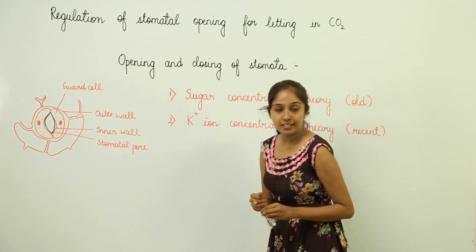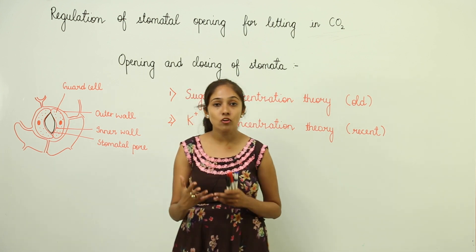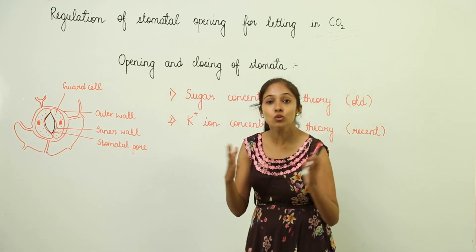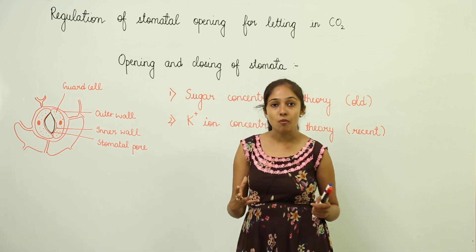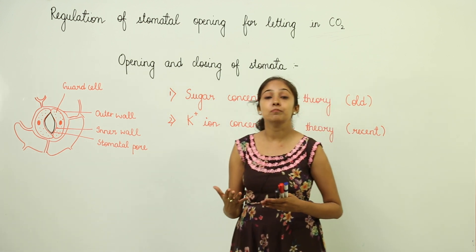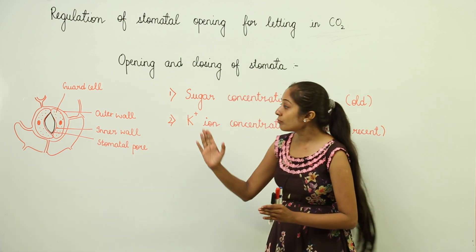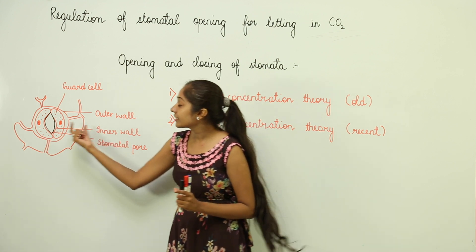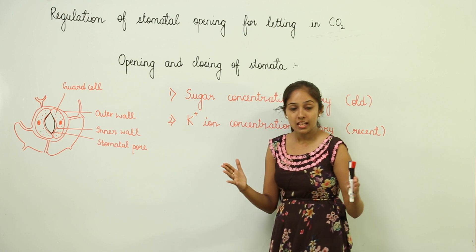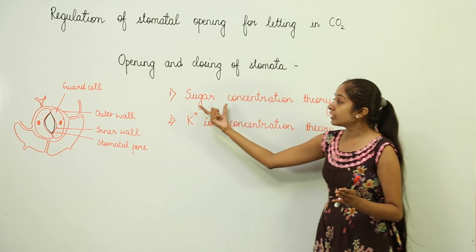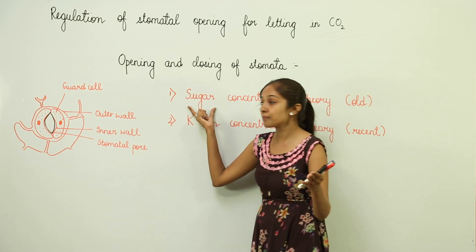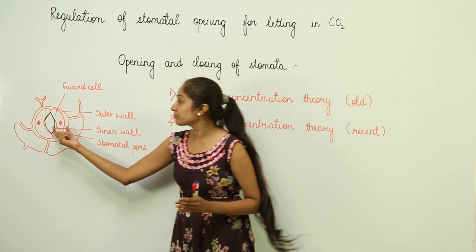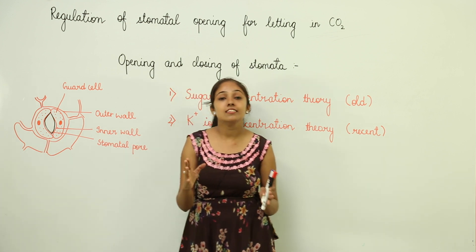What does sugar concentration theory convey? During daytime when photosynthesis is going on, in the cytoplasm of the guard cells we have chloroplasts also. So during day time, photosynthesis is going to lead to the production of sugar, that is glucose. This glucose is going to increase the osmotic pressure. Because of this increase in osmotic pressure, water from adjoining cells is going to enter into the guard cells, causing the guard cells to swell up, leading to the opening of the stomatal pore, and this is how carbon dioxide is going to diffuse in.